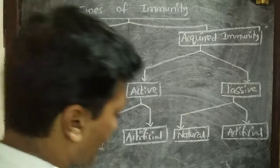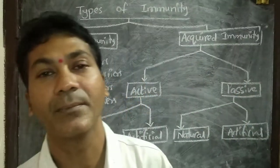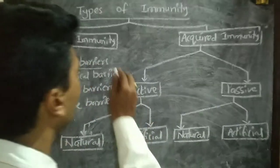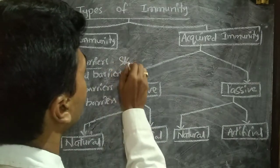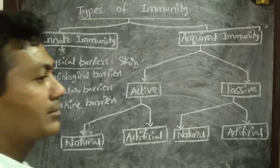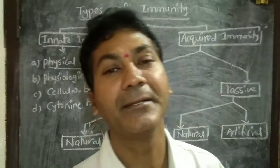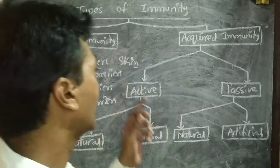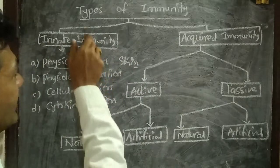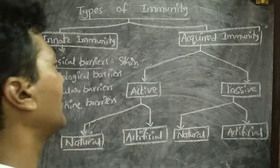The first component is physical barriers. A barrier is essentially a wall. Skin is called a physical barrier and is the first line of defense in immunity. All pathogens are prevented from entering inside the body by the physical barrier of skin. Therefore, skin, as a physical barrier, comes under innate immunity.